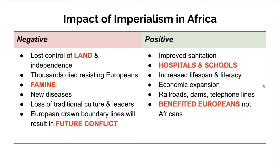However, a lot of these things being built were mainly meant to benefit the Europeans, not the native Africans. The long-term negative effects are significant: Africans lose control of their land and independence. Those who resist European imperialism die as a result. The management of the colonies leads to famine and disease, and the slow washing away of traditional cultures through assimilation. One lasting legacy you can still see on a map today is the boundary lines of what became independent African countries in the second half of the 20th century — lines that still cause conflict in the modern day.